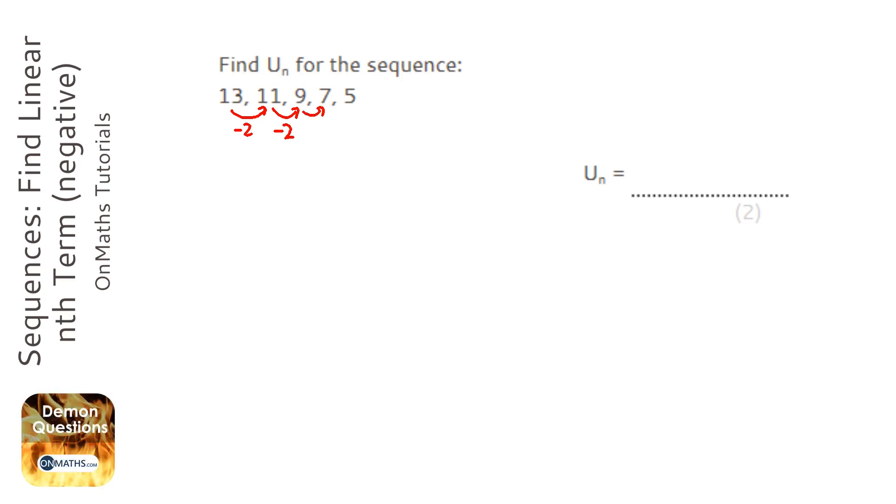So it's going up in negative twos each time. So whatever number that it's going up in you put before the n.